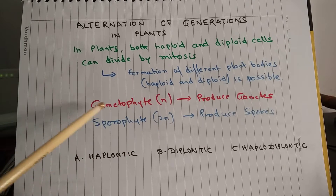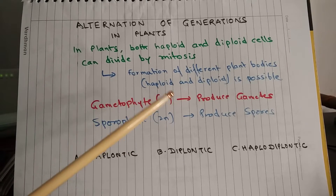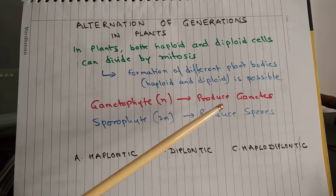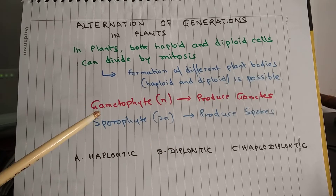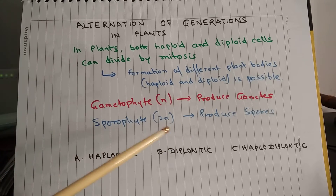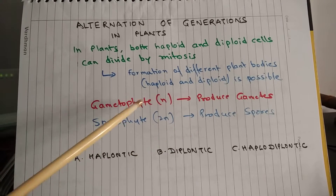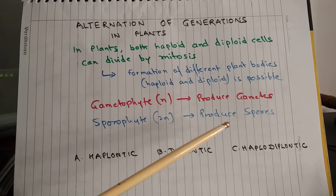The gametophyte phase is haploid and it produces gametes, while the sporophyte phase is diploid and it produces spores.